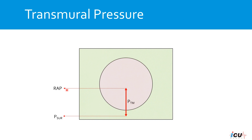The second explanation for this poor correlation is based on the concept of transmural pressure. When we put a catheter inside the central vein, we measure the pressure inside the vessel — the intraluminal pressure. Without knowing the pressure surrounding the structure, it would be difficult to estimate the real pressure inside the vessel that is actually correlating with the volume status of the patient. The transmural pressure is the difference between the intraluminal pressure minus the surrounding pressure.